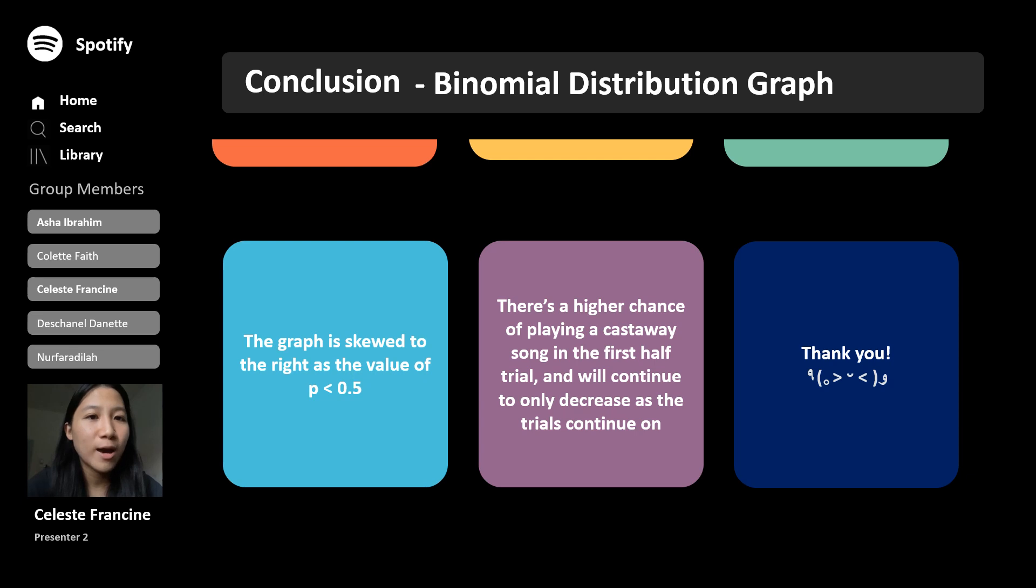As for our binomial distribution graph, we can confirm at first glance that the graph is skewed to the right, as the value of p is less than 0.5. Moreover, there's a higher chance of playing a castaway song in the first half of the trial, but will only decrease as the trials continue on.